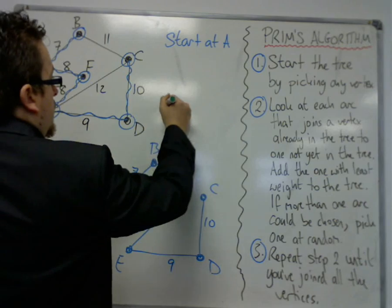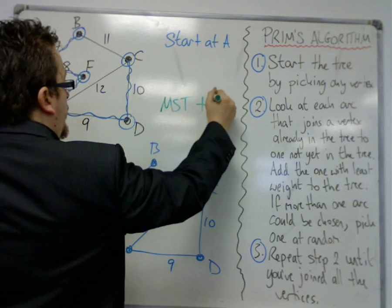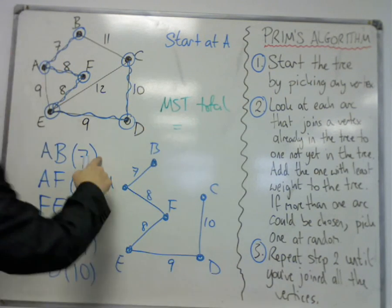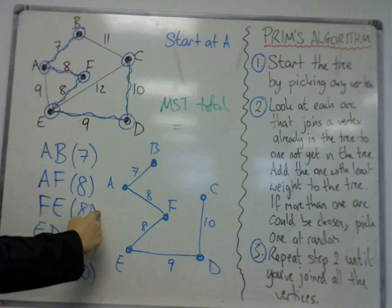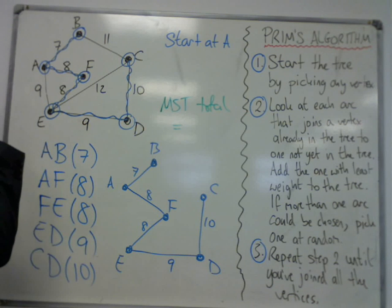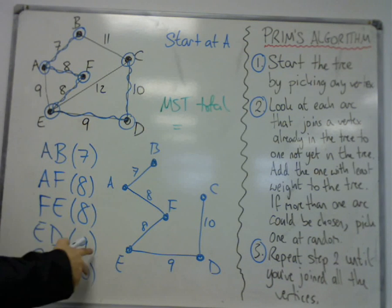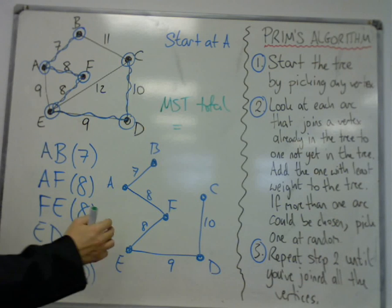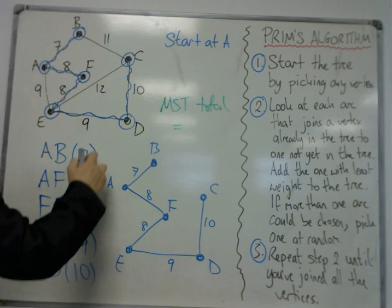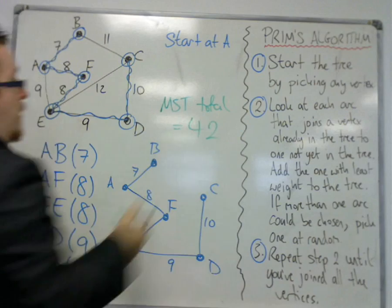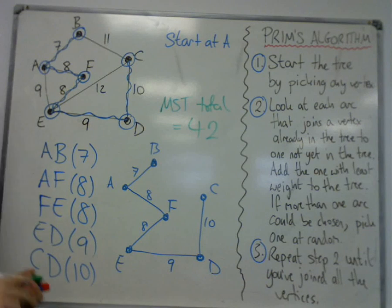So the minimum spanning tree has a total of 15, 23, 32, 42. Just check that. 19, 27, 35, 42. Yeah. So minimum spanning tree total of 42.